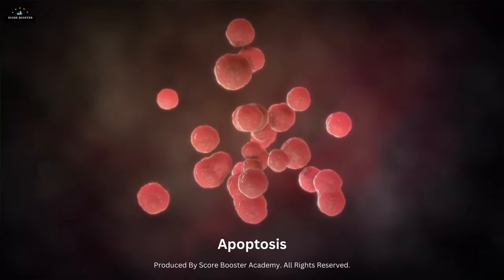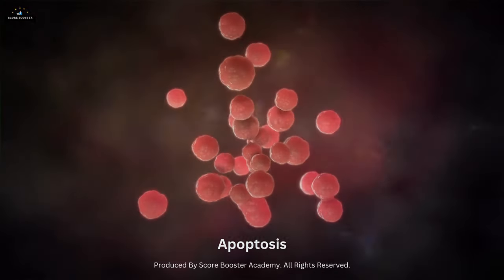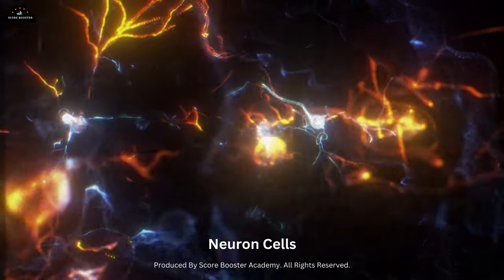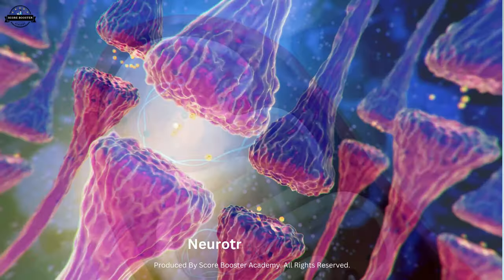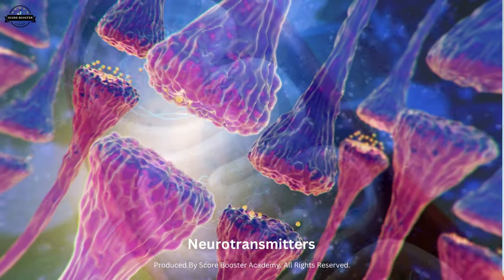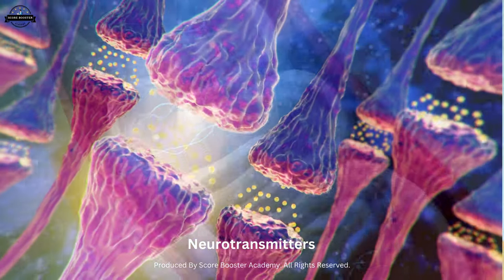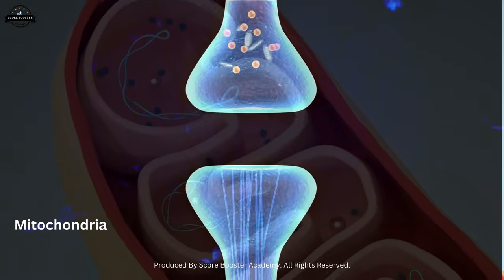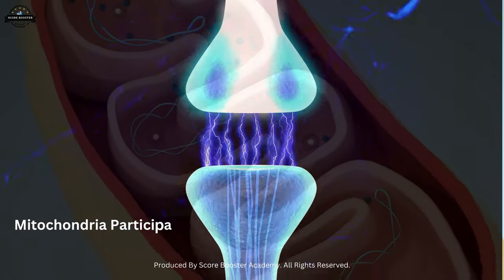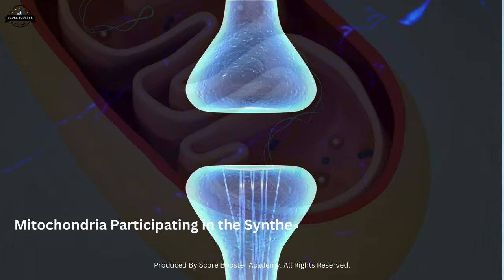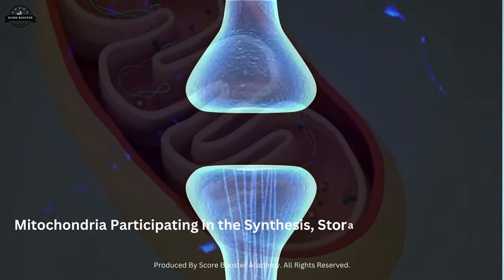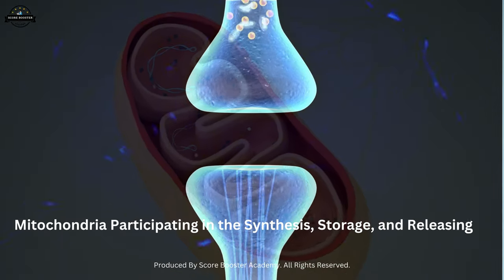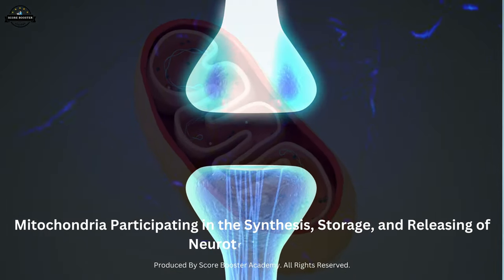In certain specialized cells, such as neurons, mitochondria are involved in the regulation of neurotransmitters. They participate in the synthesis, storage, and release of neurotransmitters, which are crucial for communication between neurons and overall brain function.